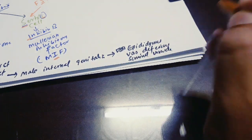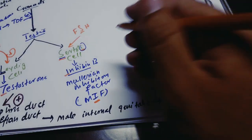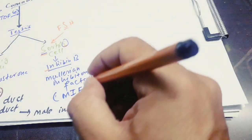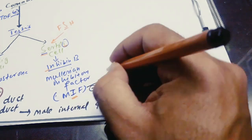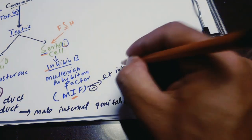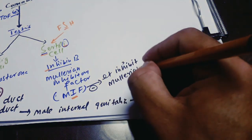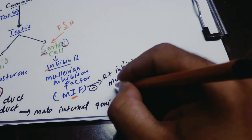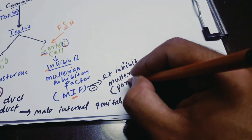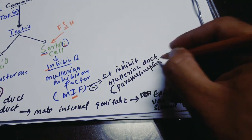MIF — the Müllerian inhibitory factor — inhibits the development of the Müllerian duct, which is also called the paramesonephric duct.